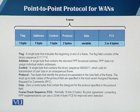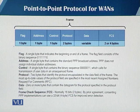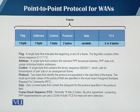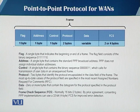The control field is also a one-byte field containing a binary sequence of six zeros and two ones, and it is used for transmission of user data in an unsequenced frame. The protocol field is a two-byte field that tells you which protocol is encapsulated in the data field. The data field contains the actual data, and just like in Ethernet, there is an FCS field for error checking.